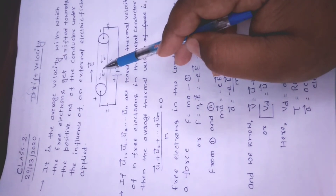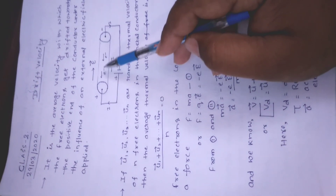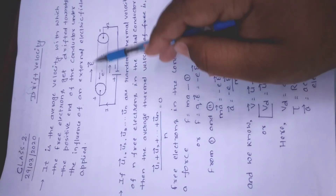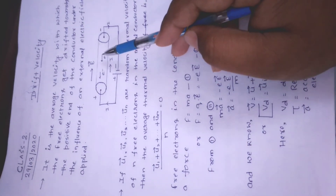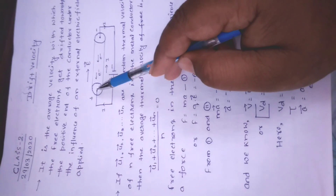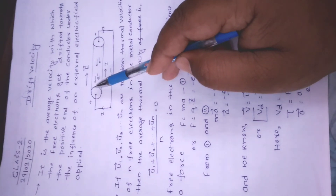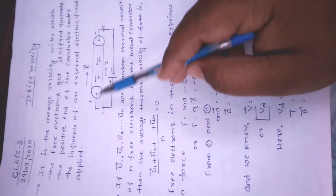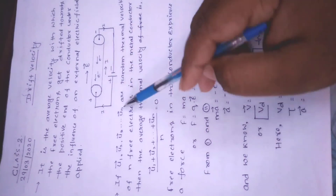इन free electrons का जो direction होगा वह electric field के opposite होगा — negative से positive की तरफ। लेकिन current का flow हमेशा higher potential से lower potential की तरफ ही रहेगा।